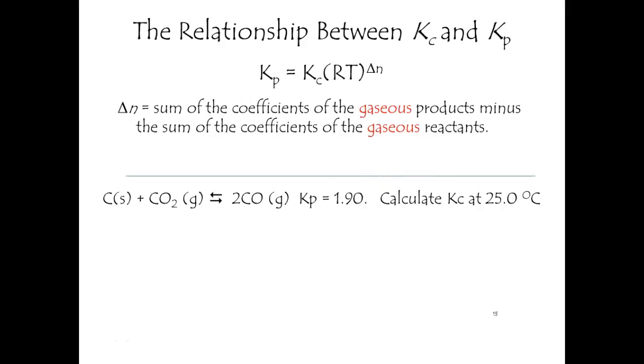Alright, so we're making some carbon monoxide. This is a sample problem from carbon and carbon dioxide. And they give you the pressure constant of 1.90. Now, what is the equilibrium constant? At 25 degrees, they need to point out that it's at a constant temperature, otherwise we ignore that.